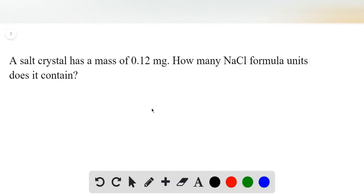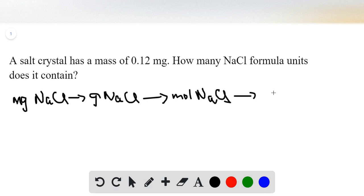We have to determine the formula units a 0.12 milligram sample contains. To develop a plan, we have mass in milligrams of sodium chloride. We can convert to grams of sodium chloride, then convert to moles of sodium chloride, and then convert to formula units.